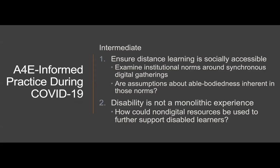Those schools who are further along in their accessibility process and have already taken the aforementioned steps could consider deepening their accessibility practice by taking the following actions. First, to ensure that distance learning is socially accessible to disabled students, K-12 schools must critically examine the able-bodied power and privilege within their institutions and the ways in which their institutions reproduce that power. Schools could begin by examining their institutional norms around facilitating synchronous digital gatherings such as classes and meetings. Are assumptions about able-bodiedness inherent in those norms? Oftentimes, norms around synchronous online meetings assume everyone is sighted and hearing. Consequently, blind and deaf participants in these gatherings are excluded.